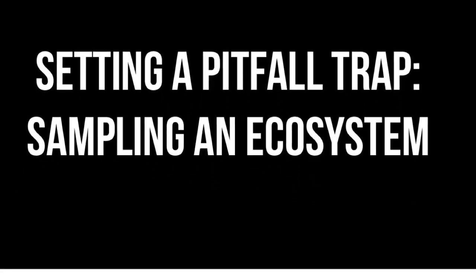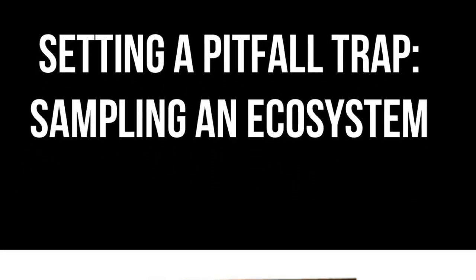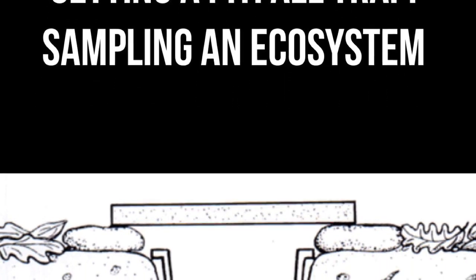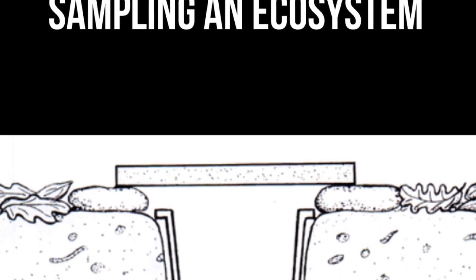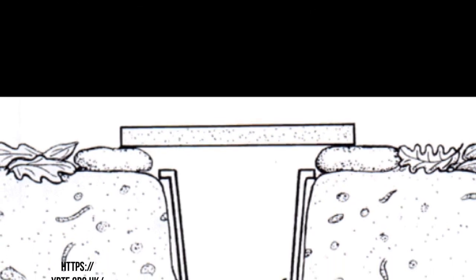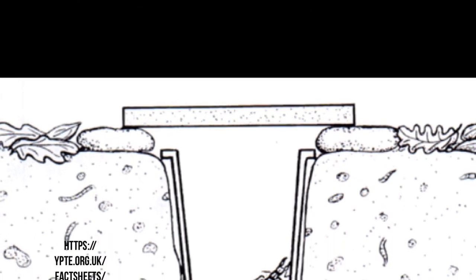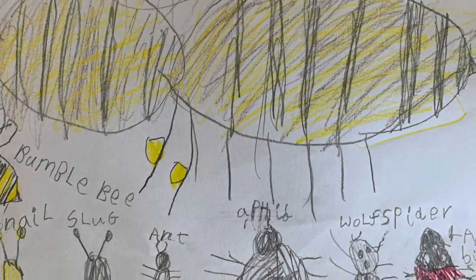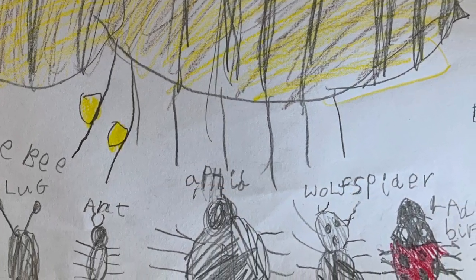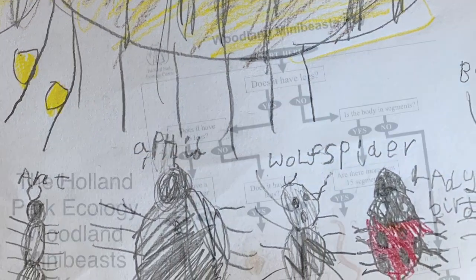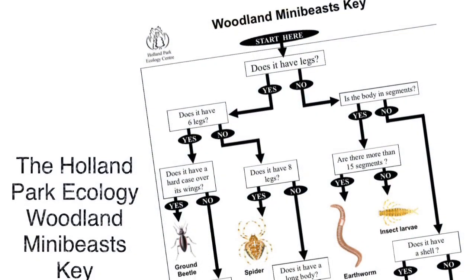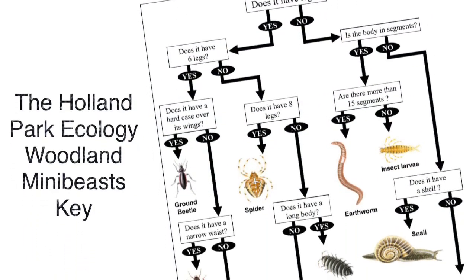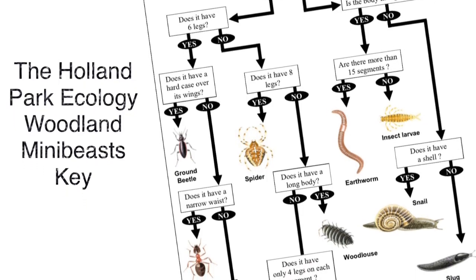We are going to set a pitfall trap to find out which bugs live in this area and which ones are the most common. The bugs will accidentally walk into the trap if you set it well. You can use a key like this one to find their names.